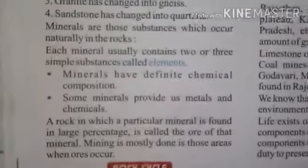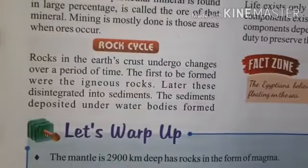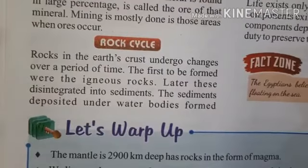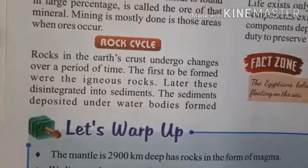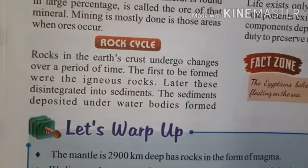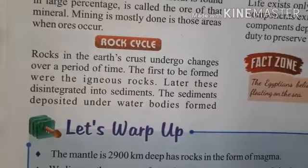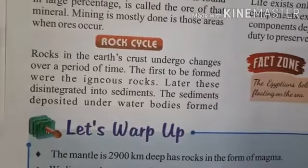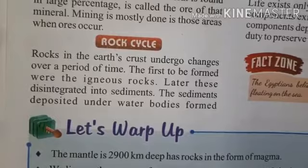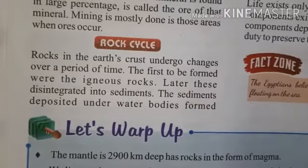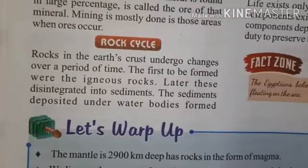Today we are going to understand the rock cycle. Any type of rock — whether igneous, metamorphic, or sedimentary — will not remain the same throughout its life. There is a life cycle called the rock cycle. For example, igneous rock will settle down at the floor or bed of the sea.